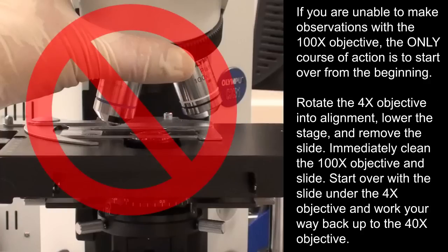If you are unable to make observations with the 100x objective, the only course of action is to start over from the beginning.